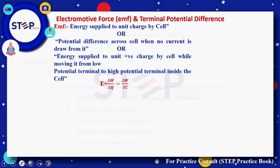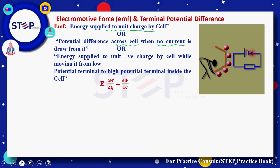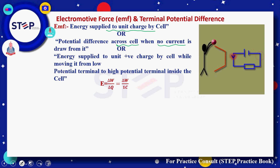The first topic is electromotive force and terminal potential difference. EMF can be defined in different ways. The first way: it is the energy supplied to a unit charge by the cell. In other words, EMF is the potential difference across the cell when no current is drawn from it — the potential difference across the terminals when no current is flowing is also called electromotive force.